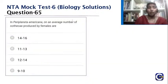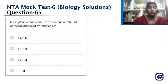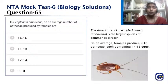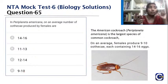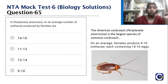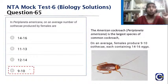In Periplaneta americana, the average number of oothecae produced by females: oothecae are secreted by collateral glands in the third and fourth abdominal segments. The cockroach produces around 9 to 10 oothecae, each containing 14 to 16 eggs. The answer is 9 to 10 oothecae.